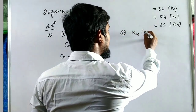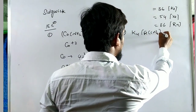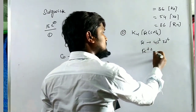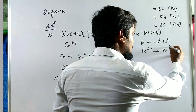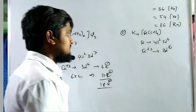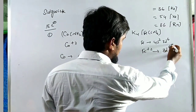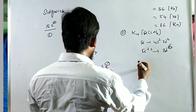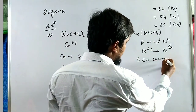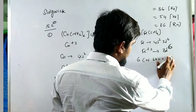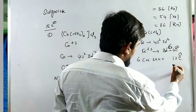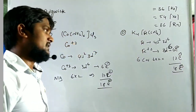For K4[Fe(CN)6]: iron's configuration is 4s², 3d⁶. In the Fe²⁺ state, 2 electrons are lost from 4s only, leaving 3d⁶ — that is 6 electrons. The 6 cyanide ions each donate a pair of electrons, contributing 12 electrons. Total = 6 + 12 = 18 electrons. This complex is also stable.